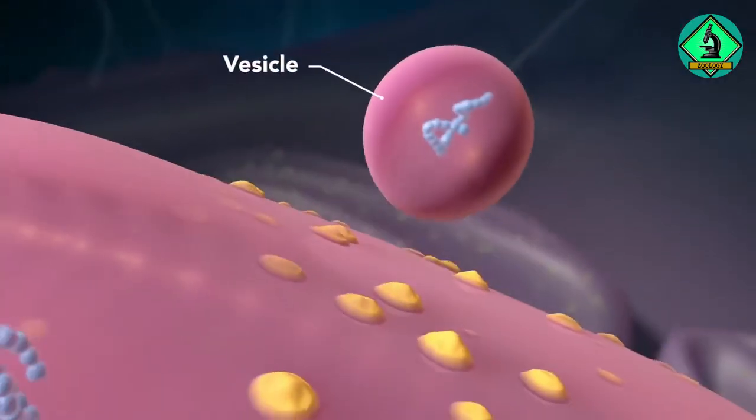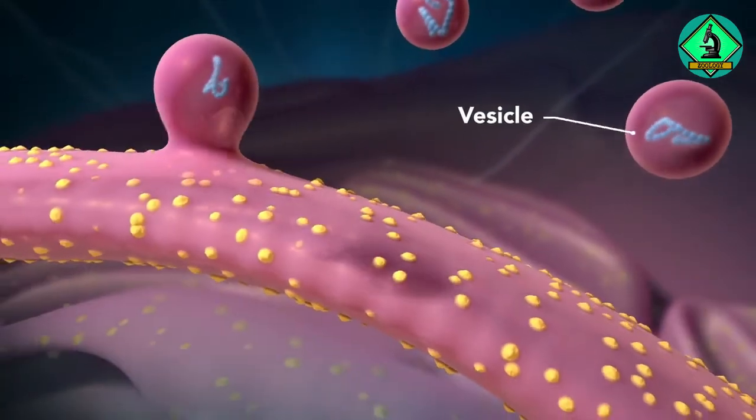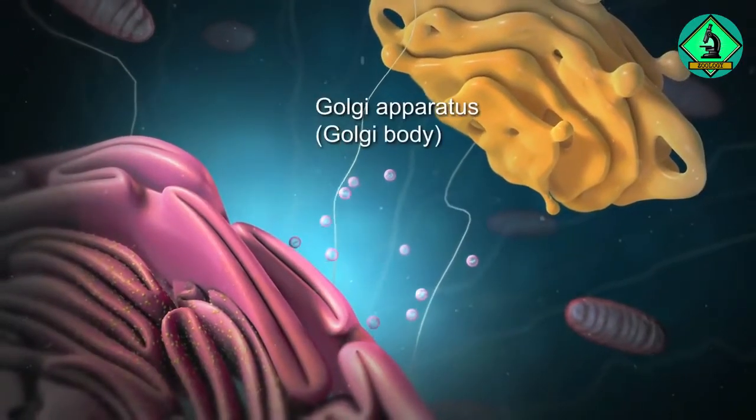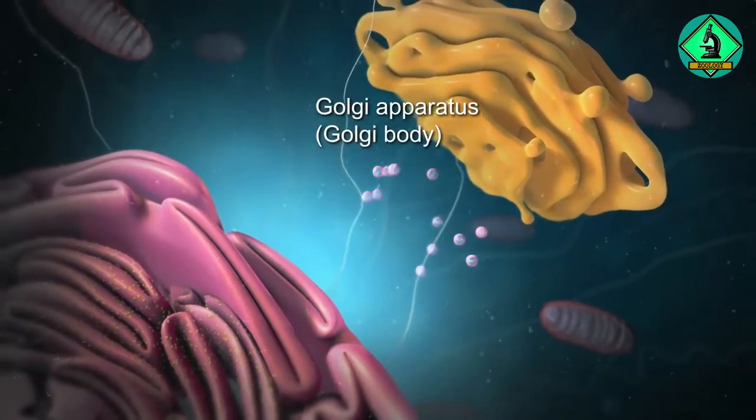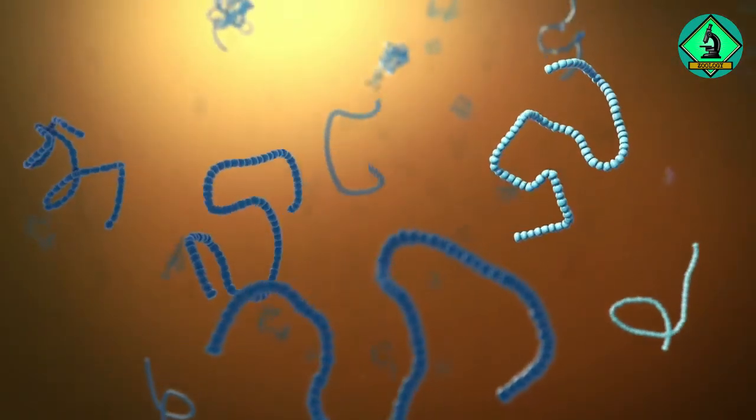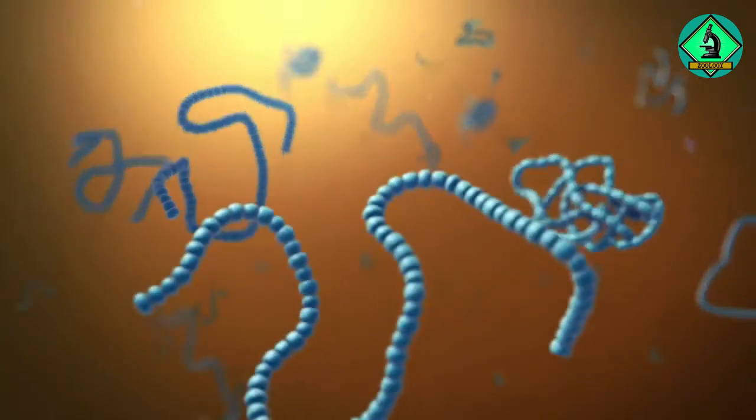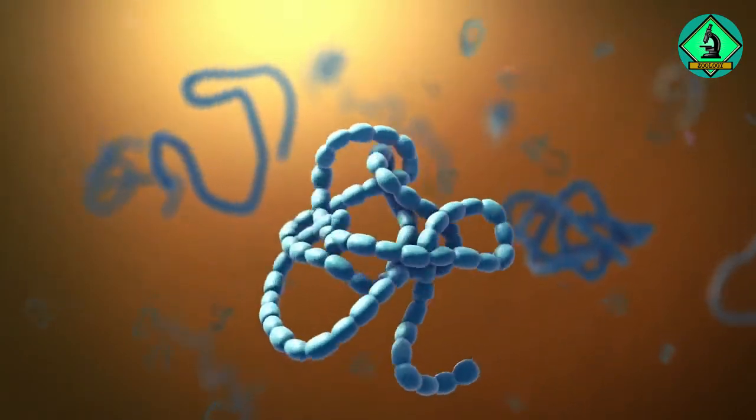Proteins and other materials emerge from the endoplasmic reticulum in small vesicles, where the Golgi apparatus, sometimes called the Golgi body, receives them. As proteins move through the Golgi body, they're customized into forms that the cell can use.